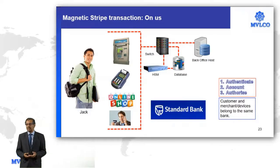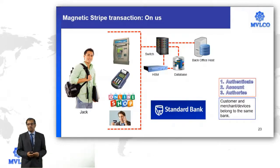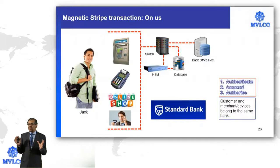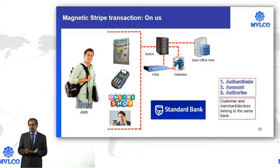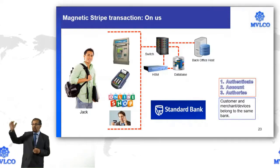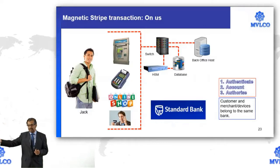Can you please reiterate the difference between switch and back office regarding the information they hold? The switch is holding information about which cards are issued by my bank, my issuing bank. At the back office, you will have, for example, your savings account.